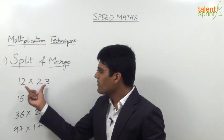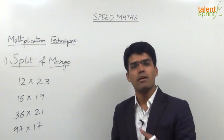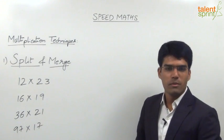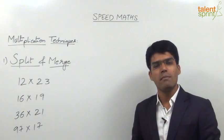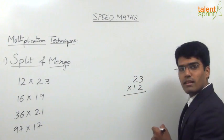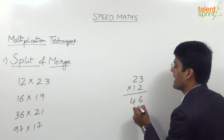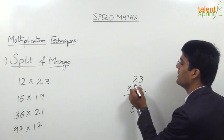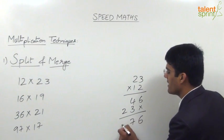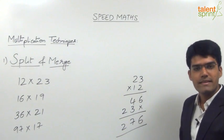Let us say we have to multiply 12 and 23. Going by the general multiplication procedure: 23 into 12 — 2 into 3 is 6, 2 into 2 is 4, then 1 into 3 is 3, 1 into 2 is 2. So the final answer would be 6, 7, and 2, that is 276. So 23 into 12 is equal to 276.